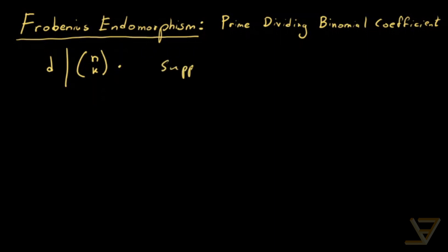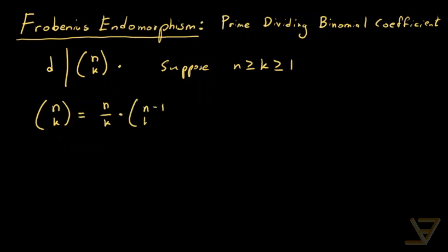Suppose n is greater than or equal to k is greater than or equal to 1, and these are both integers. Then what we can prove by the factorial expansion of this binomial coefficient is that n choose k equals n over k times n minus 1 choose k minus 1. What happens next is that we divide both the numerator and the denominator of n and k by the GCD of n and k.